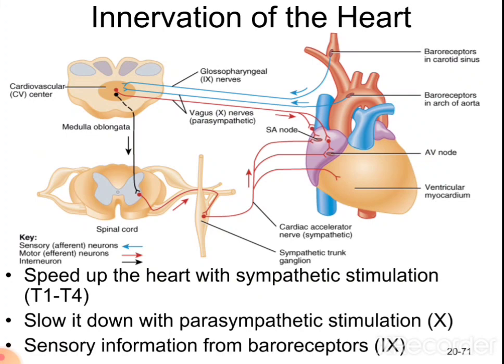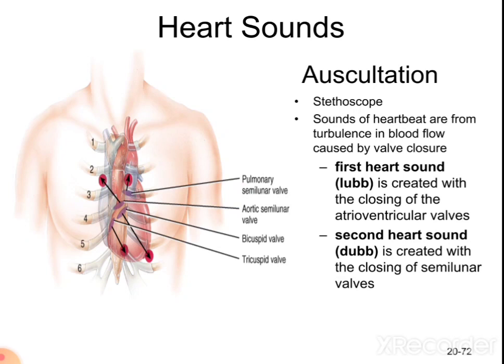The heart is supplied by sympathetic as well as parasympathetic innervation. Parasympathetic innervation is via the 10th cranial nerve (vagus nerve), which slows down the heart rate. Sympathetic stimulation is via thoracic spinal nerves T1 to T4, which increases the heart rate. There are two heart sounds: the first heart sound (S1, 'lub') is due to closure of the atrioventricular valves, and the second heart sound (S2) is due to closure of the semilunar valves.